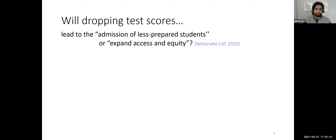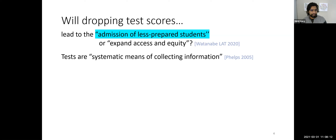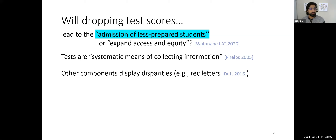On the side that dropping test scores leads to admitting less prepared students: tests are systematic means of collecting information. For any optimal decision-making system, if tests were bad information, the optimal decision maker just wouldn't use them — tests are never worse than no tests because it's strictly more information. Other components like recommendation letters are also not clean: there's a lot of literature showing recommendation letters are systematically biased against exactly the groups you might think they're biased against.